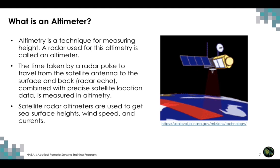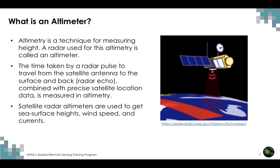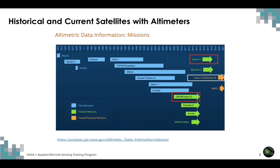Altimetry is a technique for measuring height. A radar used for measuring height is called an altimeter and it operates on the principle shown schematically here. A radar transmits a pulse to the target — the earth's surface — and then measures the reflected echo back. The time taken by a radar pulse to travel from the satellite antenna to the surface and back, combined with precise satellite location, provides information about height. Satellite radar altimeters are used to get sea surface heights, wind speed, and currents.